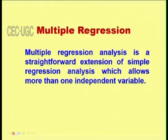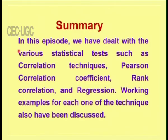Multiple regression means that instead of taking only one variable x, we can take 2 or 3 variables — that is called multiple regression. It gives the linear relationship between 3 or more variables. To summarize this episode: we dealt with correlation, two types of correlation — Pearson's correlation and rank correlation — and regression. Working examples for each technique were also discussed.